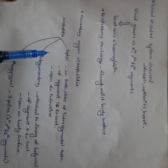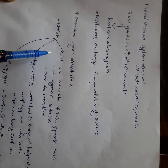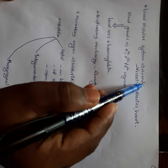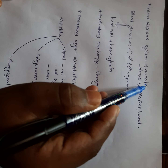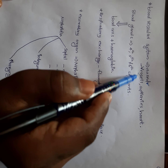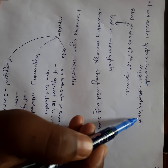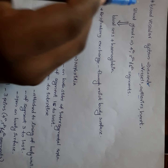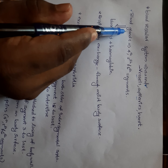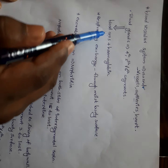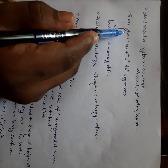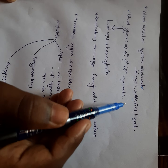Next, I am taking the blood vascular system of earthworm. They have a closed circulatory system, which is very important. Their circulatory system is comprised of vessels, capillaries, and heart. Another important structure is blood glands, which produce blood cells and hemoglobin. These blood glands are present on the 4th, 5th, and 6th segments.